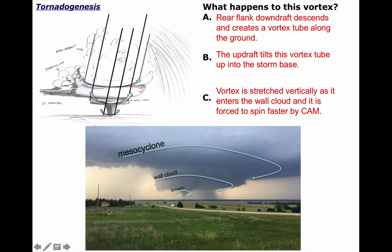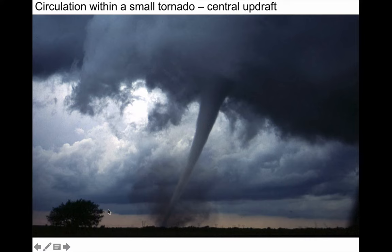Here's what I want you to take away: supercells rotate, and they are able to concentrate that rotation into a focused, narrow column of rotating air we call a tornado. That rotation forms on vertical wind shear. Supercells rotate, and they concentrate and stretch their rotation.